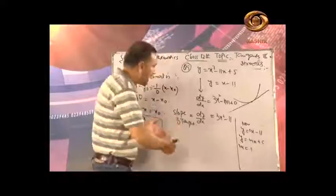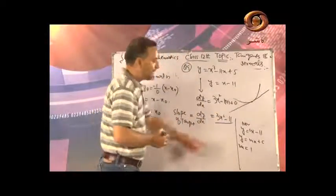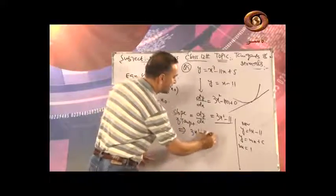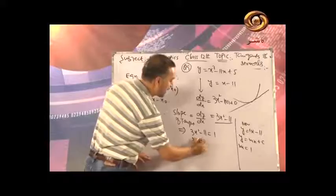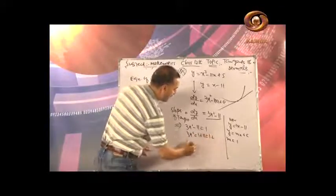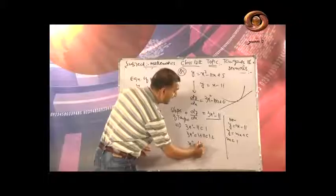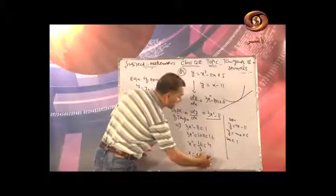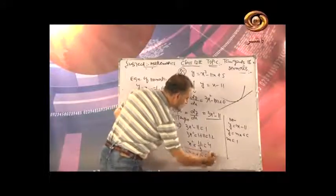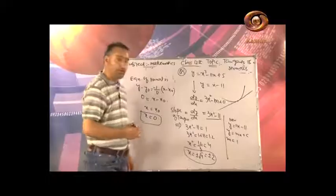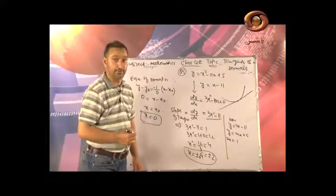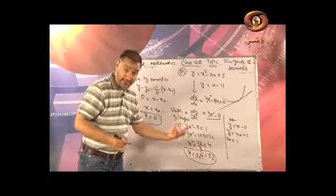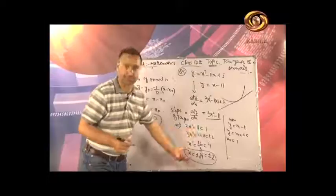Solving 3x² - 11 = 1: 3x² = 12, so x² = 4, giving x = ±2. Two possible x-values: x = 2 and x = -2. These are our candidate x-coordinates for the point of contact.